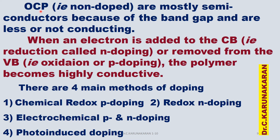However, when an organic conducting polymer is doped — either by adding an electron (n-doping, reduction) or by removing an electron (p-doping, oxidation) — the polymer becomes highly conducting. There are four main methods of doping: chemical redox p-doping, chemical redox n-doping, electrochemical p- and n-doping, and photoinduced doping.